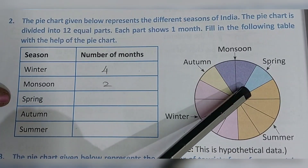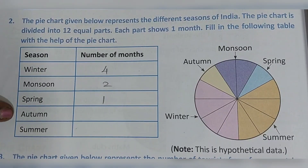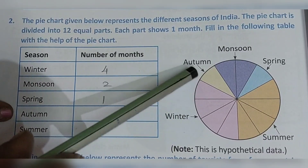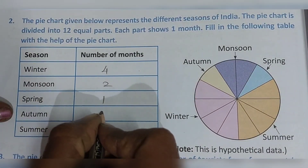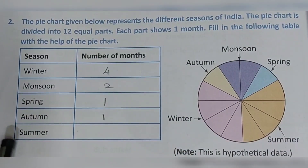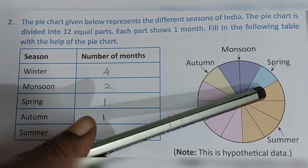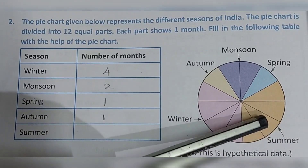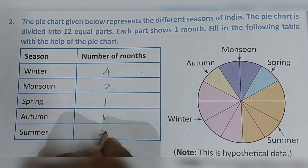Autumn is represented in yellow color — just one month, so we write one. Next, summer season is given in orange color. How many months are there? One, two, three, four — so write four for summer.